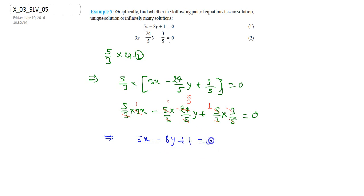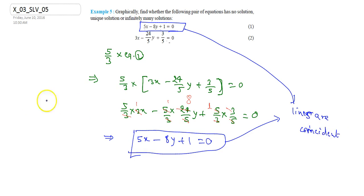Since this equation and first equation are same, I can say that the lines are coincident. Coincident means both the lines are same.